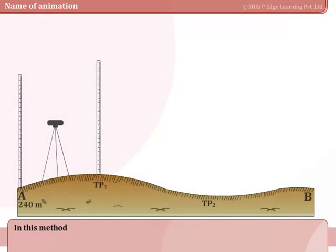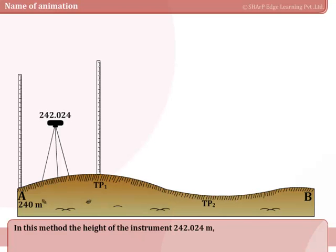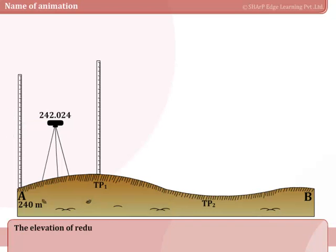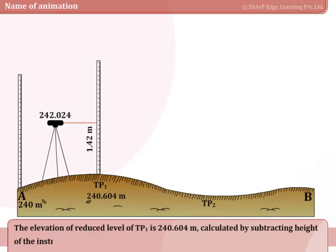In this method, the height of the instrument is calculated for each setting of the instrument by adding back sight to the elevation of the benchmark. The elevation or reduced level of TP1 is 240.604 meters, calculated by subtracting the foresight from the height of the instrument.